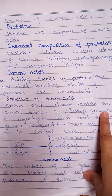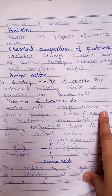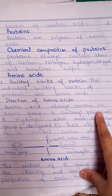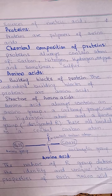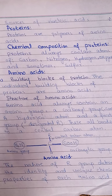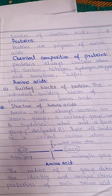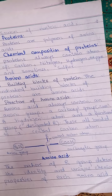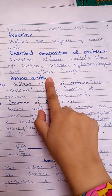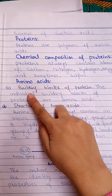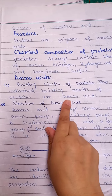Looking at the chemical composition: in our food there are all types of nutrients, and those nutrients contain carbon, nitrogen, oxygen, hydrogen, and sulfur. Now, what are amino acids? The individual building blocks of proteins are amino acids, and there are many different types of amino acids.